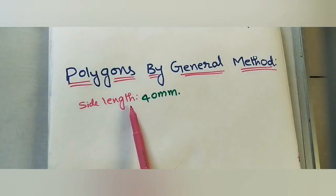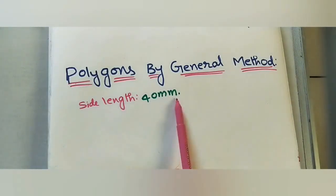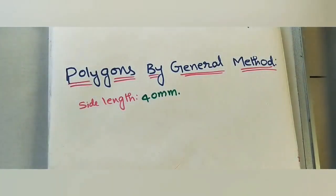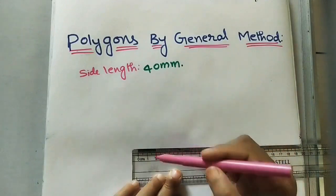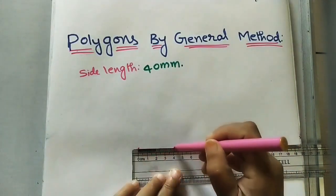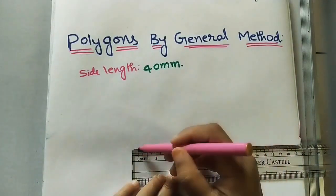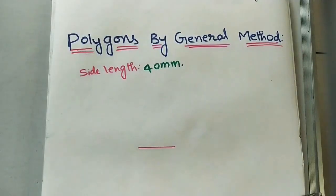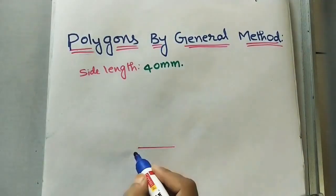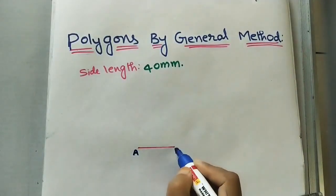To build a regular polygon, we first need to take a side length. If it is not given, you can take any length. Here I am taking four centimeters or 40mm. First, draw a line of four centimeter length and mark the end points A and B.